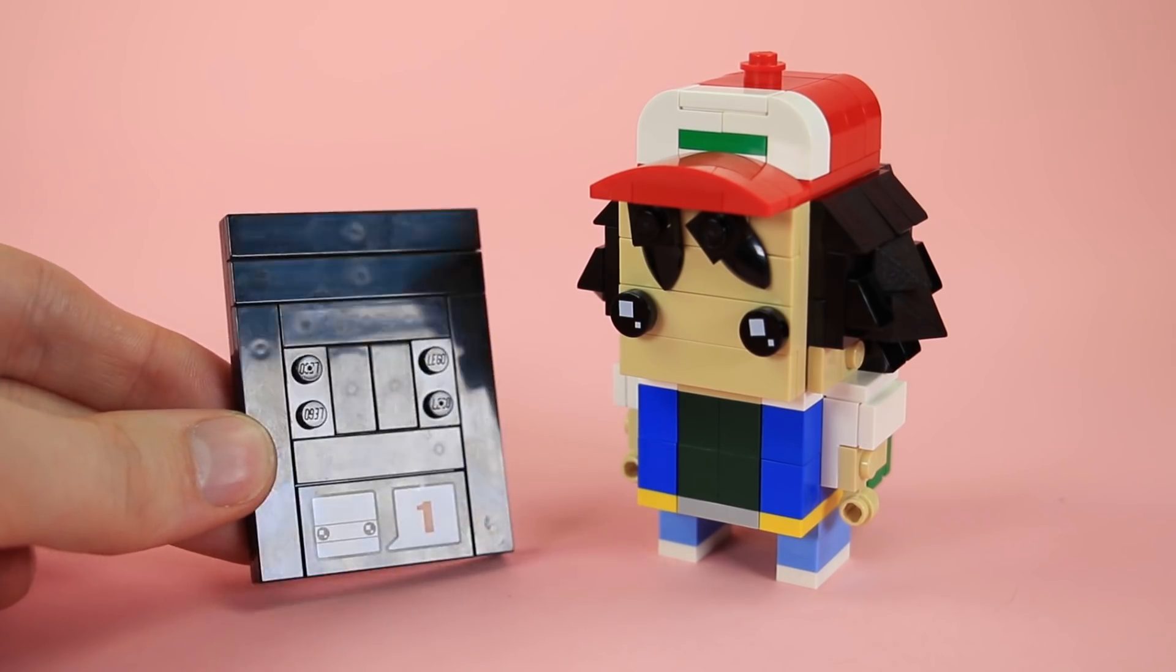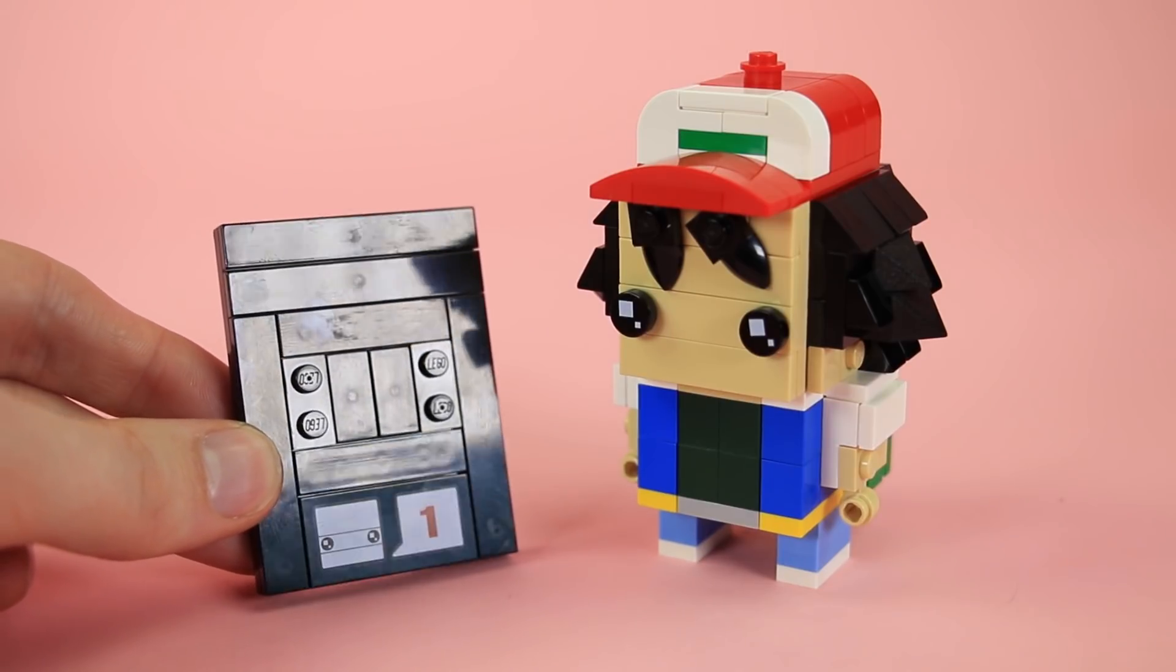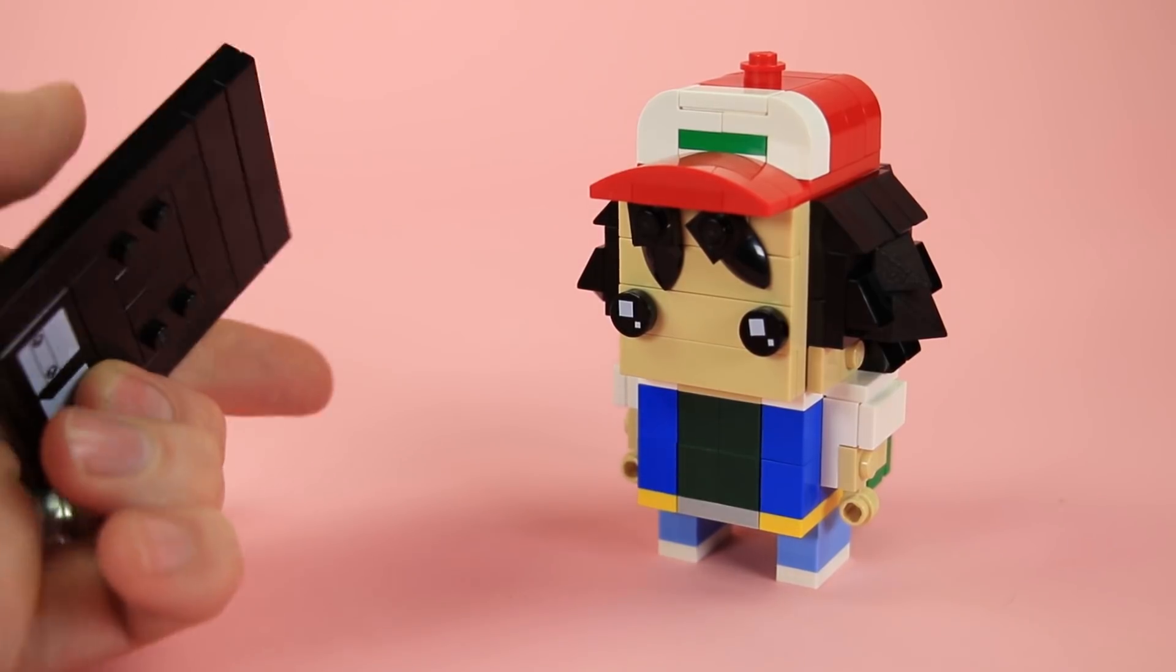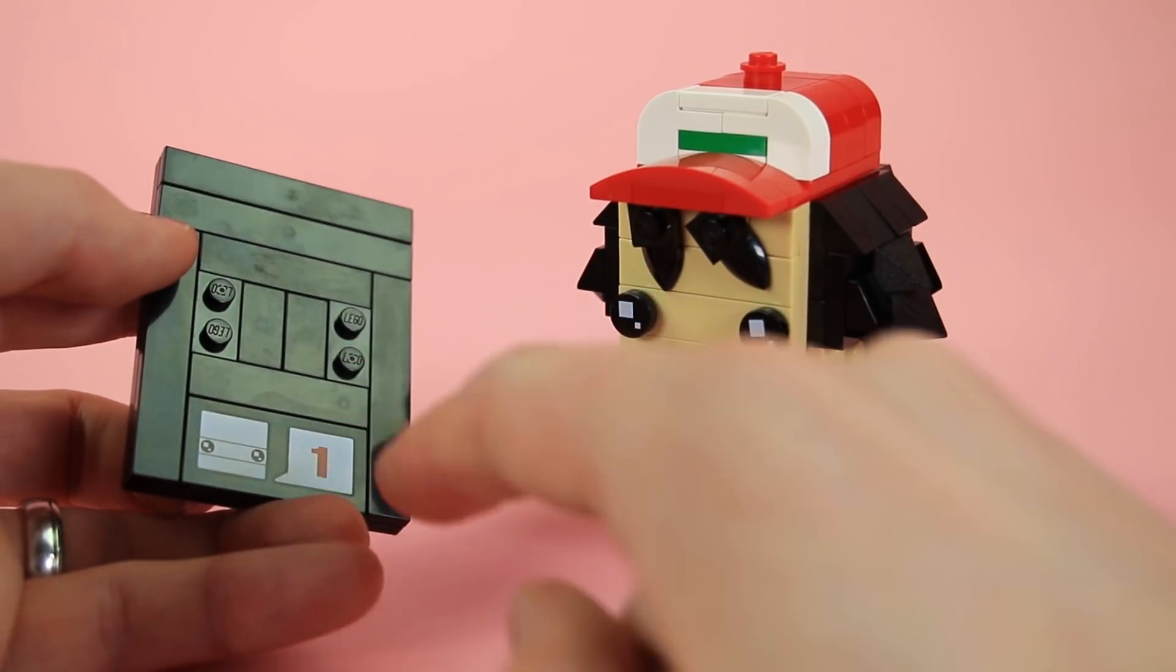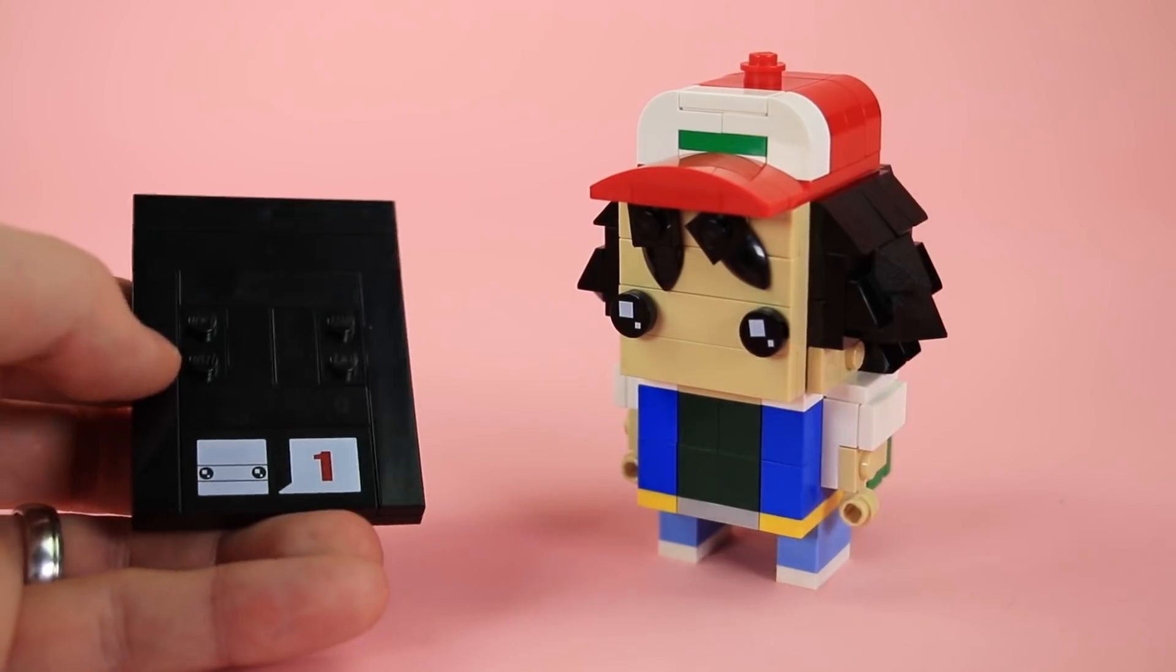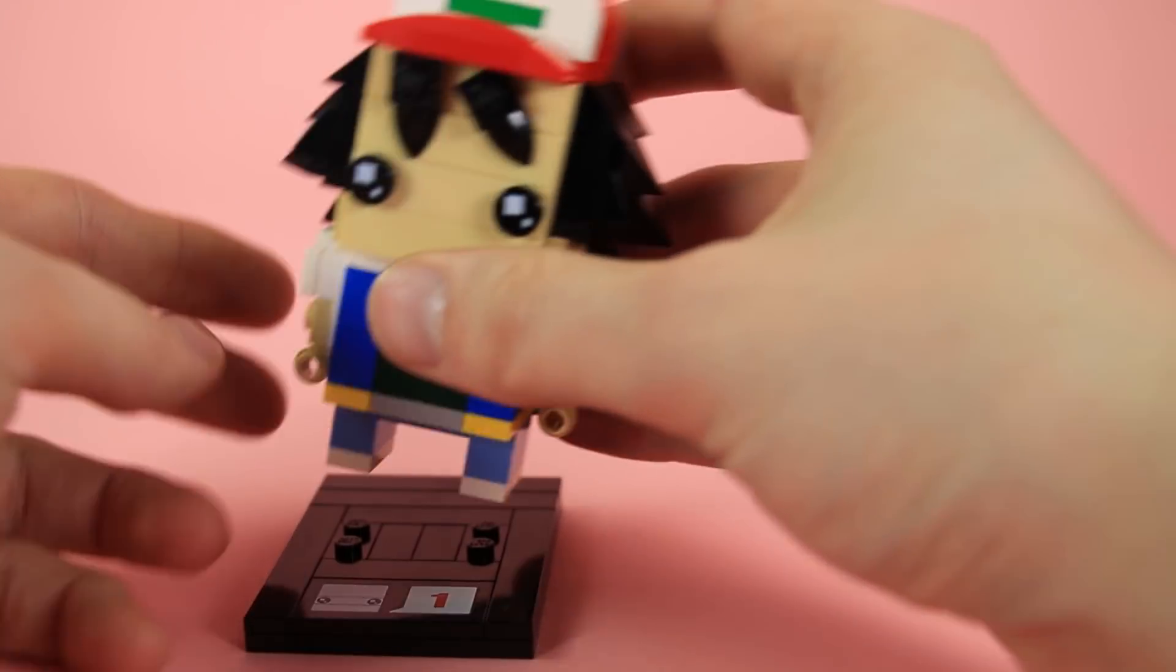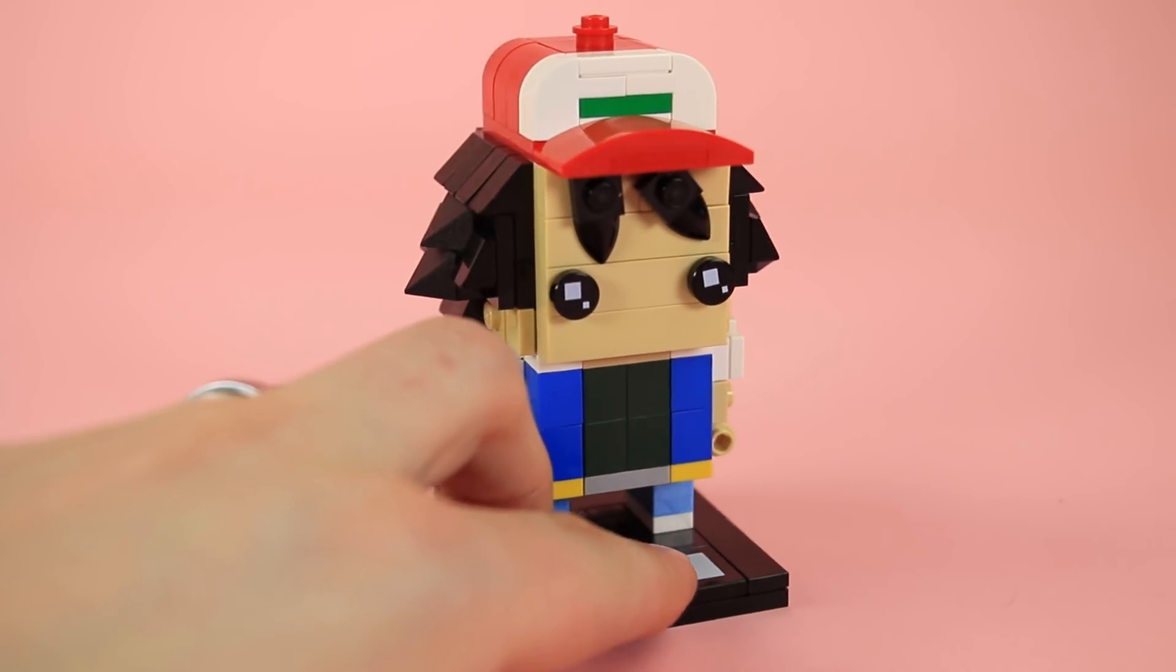Now if you so desire you can also build a little brick heads stand for him to go on. This is a 6x8 plate in black. And then it's just mostly covered up with tiles aside from the special brick heads tile down there. If you've got a spare one of those. And some 1x2 plates in the center there. And then you can set your Ash and go catch some Pokemon.